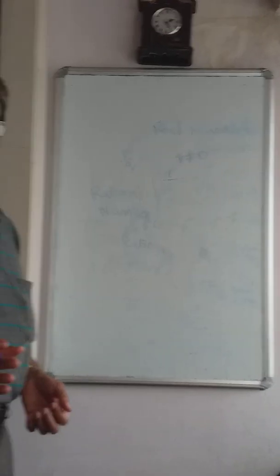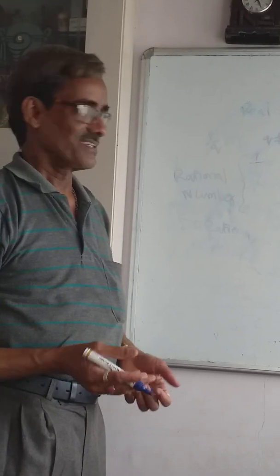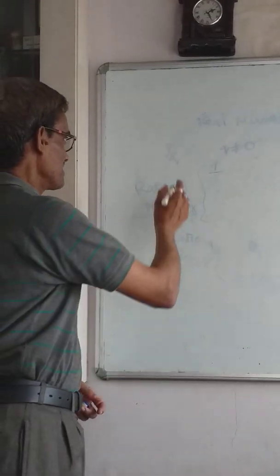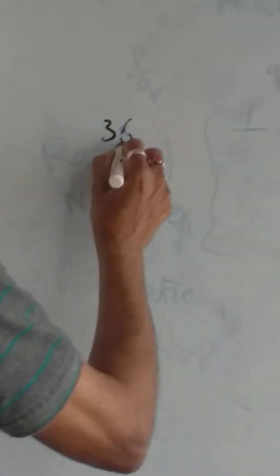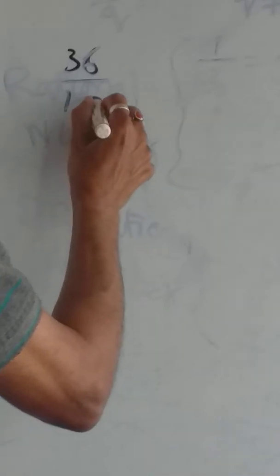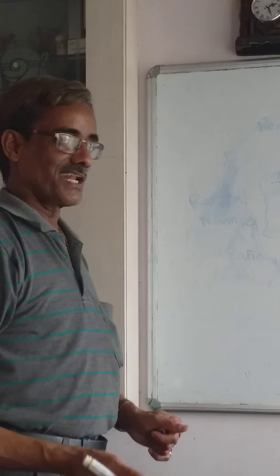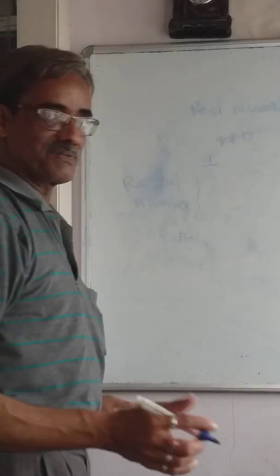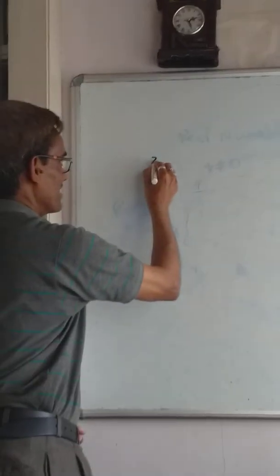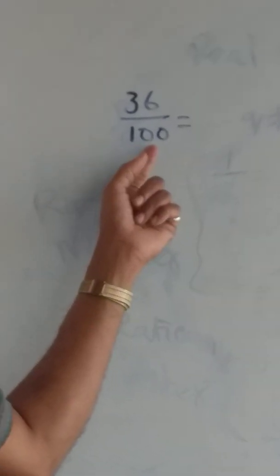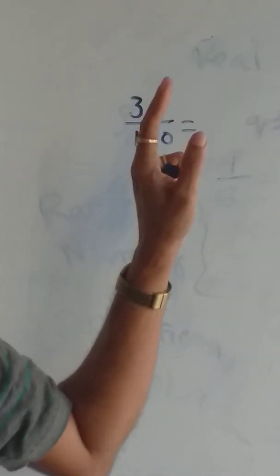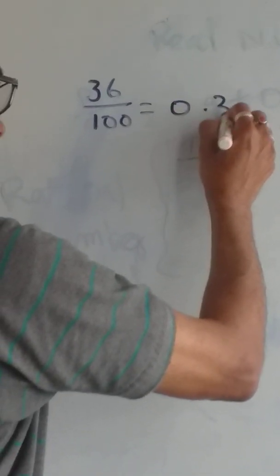Now I'm going to give some decimal expansion examples. I'll write one fraction: 36 by 100. After dividing, because there are two zeros and 36 has two digits, you can put the point directly. The answer is 0.36.